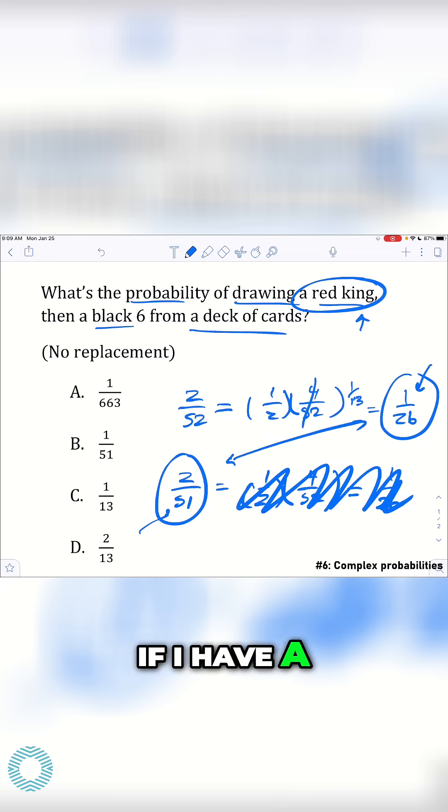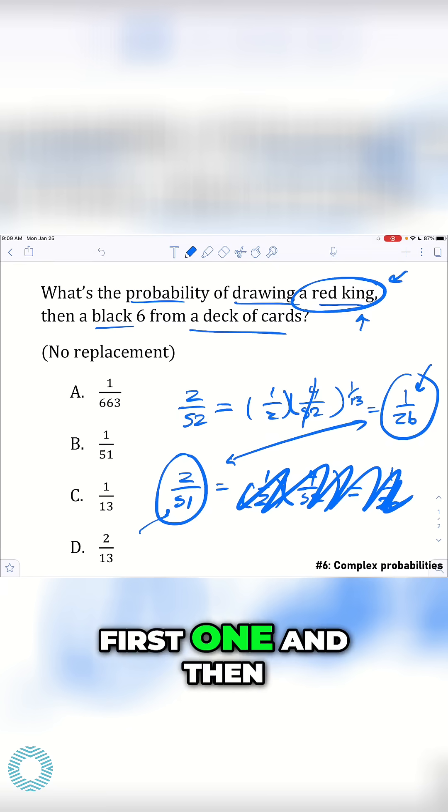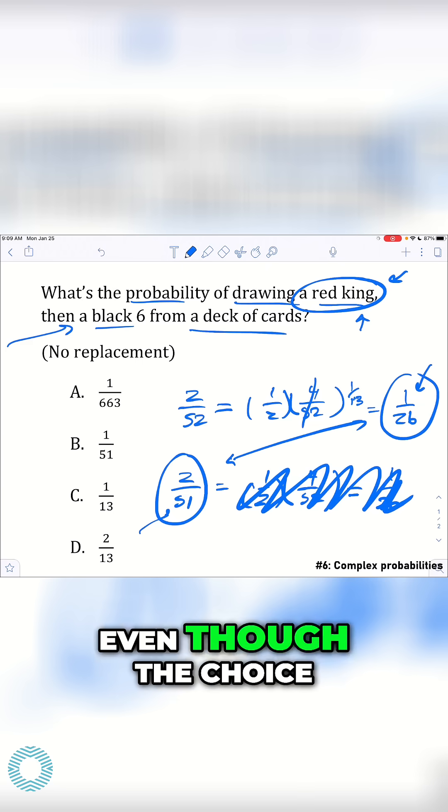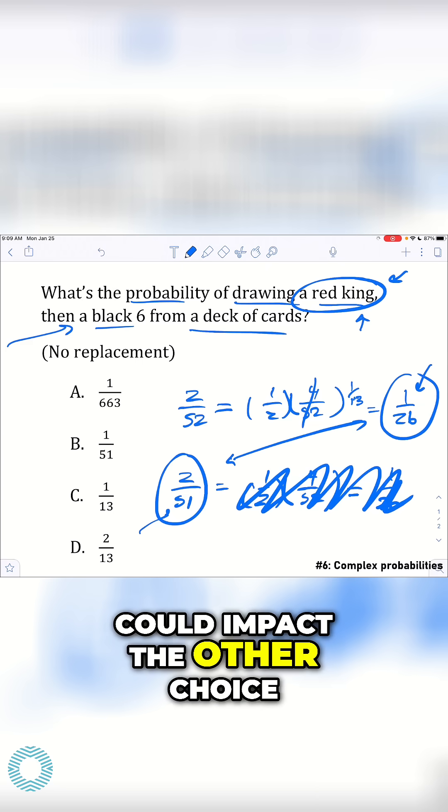Like if I have a 1 out of 26 chance of getting a red king on the first one, and then I have some other chance of getting a black 6 on the other, those are actually independent. Even though the choice of the red king could impact the other choice,